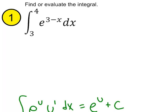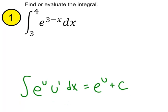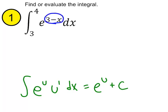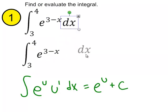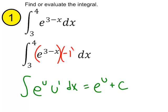Since we are looking for the derivative of the exponent to be sitting right next to the e to the u term, let's look at what the derivative of this exponent would be — it would be negative 1. So let's insert a negative 1 right beside the original integrand. Remember, this is the u-prime term.